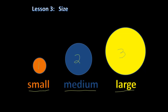The medium object is between the small and the large — it's the middle object in size. This object is small, this object is medium, and the large object is the biggest, tallest object out of the three. The medium object is bigger than the small one and smaller than the large object. The large object is large because it is bigger than the first object and the second object.